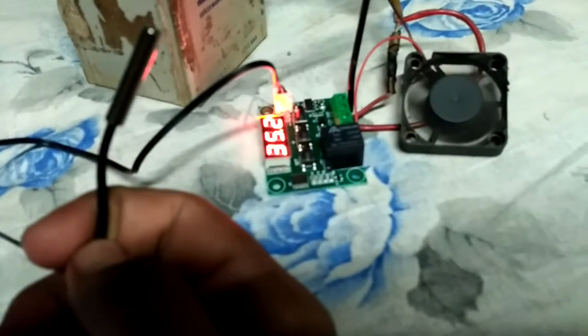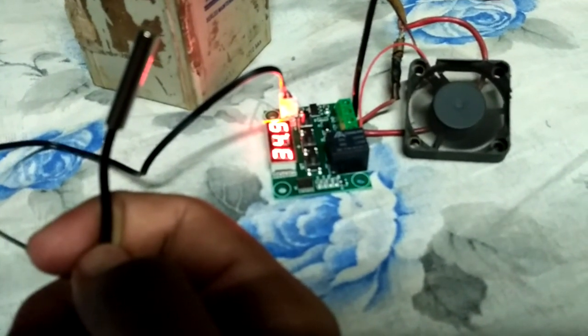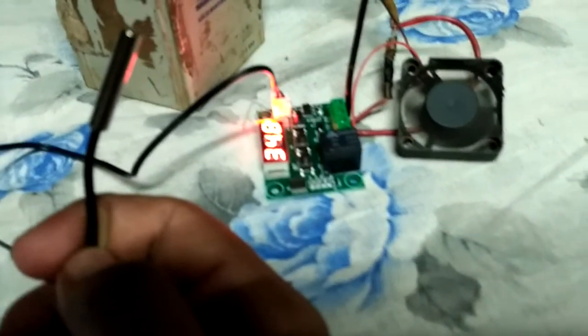And if I leave it, the temperature will go down. See, it's going down, and as it reaches that MJ which we have set, that is 33.5, it will turn off automatically.